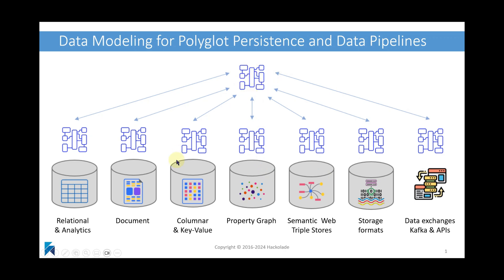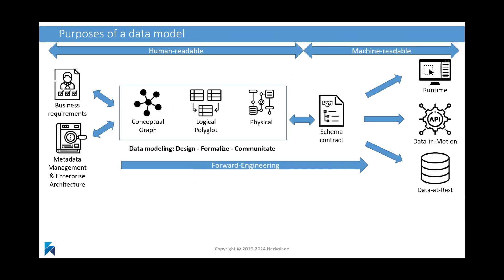There are two basic use cases. In the first use case, you start from a blank page, build your model from scratch, complete with entities, attributes, and foreign key relationships. Then you can forward engineer the resulting schema or script to a file or to a database instance.